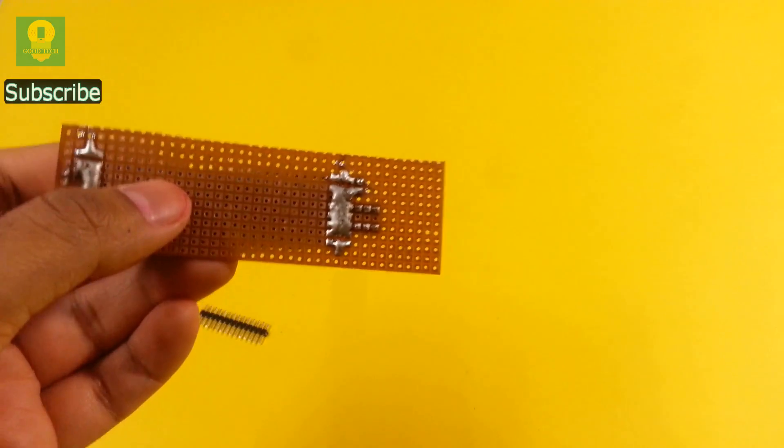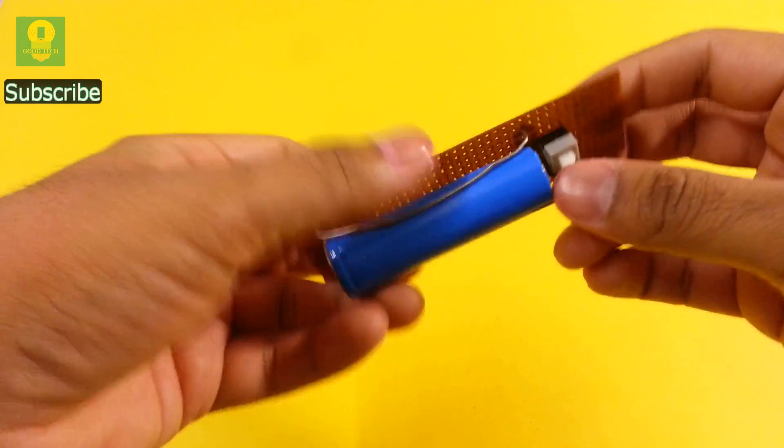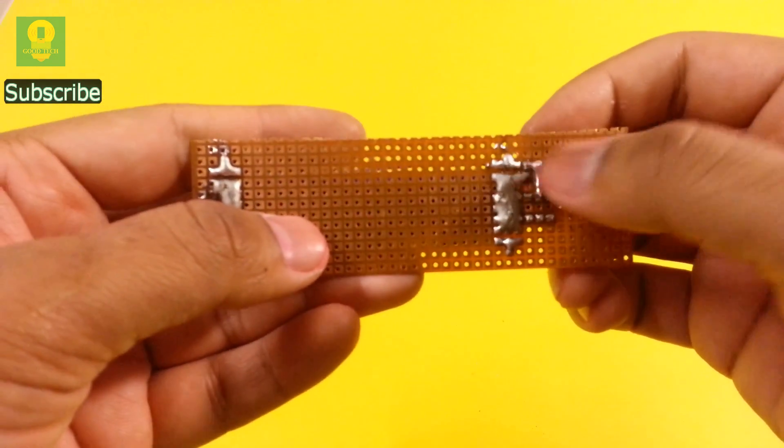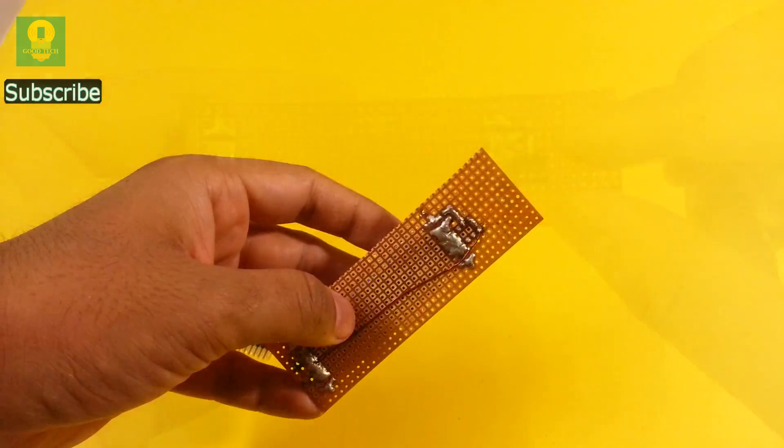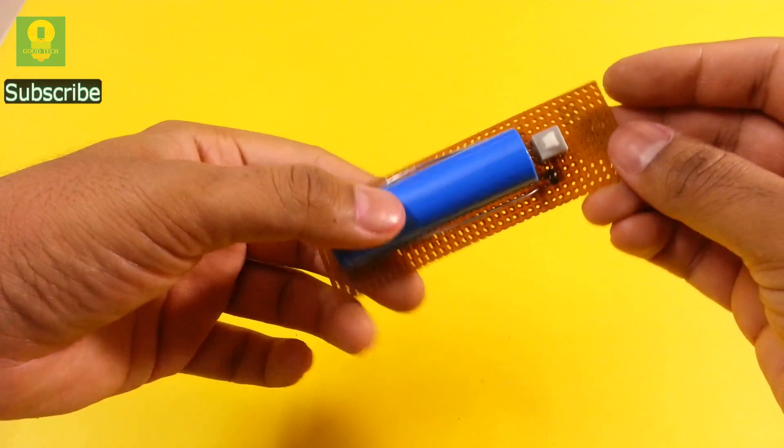Solder a PCB switch on the board. Connect the remaining pin to the switch. Connect the switch to the remaining terminal of the cell holder using a wire.